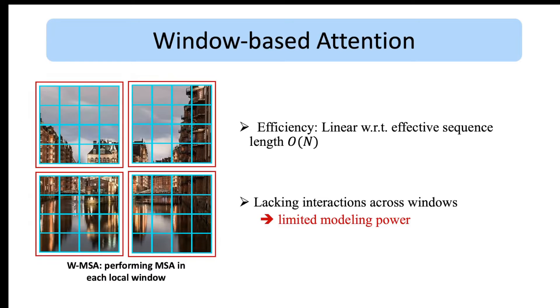Using this window-based self-attention, the computational complexity is reduced to linear with respect to the number of tokens N. However, the drawback is that now we only consider the interactions within local windows. So this approach cannot model relationships of tokens across different windows and thereby the modeling power is reduced.